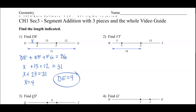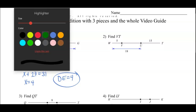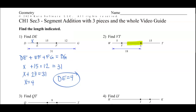In number 2, we have three parts, and interestingly, the way they give us WU. We know this, so we can set that as X. Because we know WU, WV plus VU will equal WU. So 5 plus X equals 18. We subtract 5 from both sides, and X equals 13.